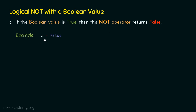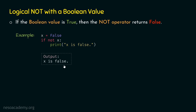Let's say that x is false and we want to apply the not operator on x within an if statement. Let's check this condition: if not x. If it is the case that x is false, then this condition becomes true. In that case, we must print 'x is false'. We know that x is false, therefore this x will be replaced by false at runtime, and not of false is true. Therefore, the condition becomes true and 'x is false' will be printed on the screen. The output of this program is 'x is false'. In this way, we can use logical not with a boolean value.